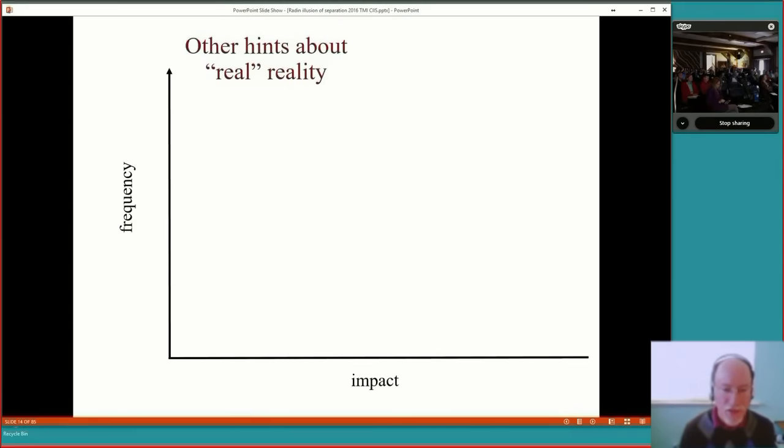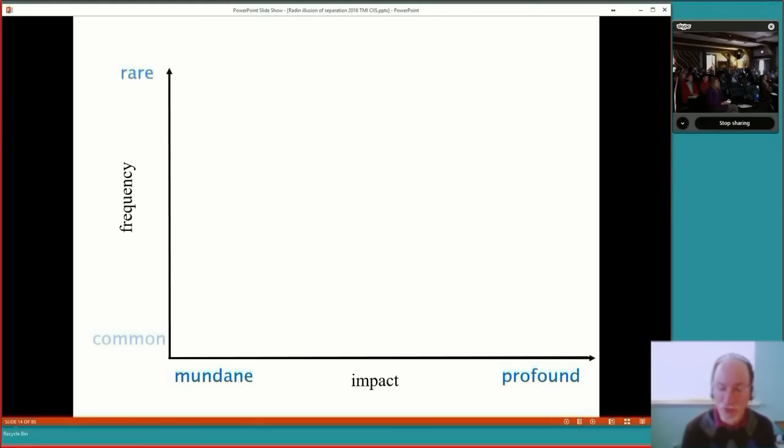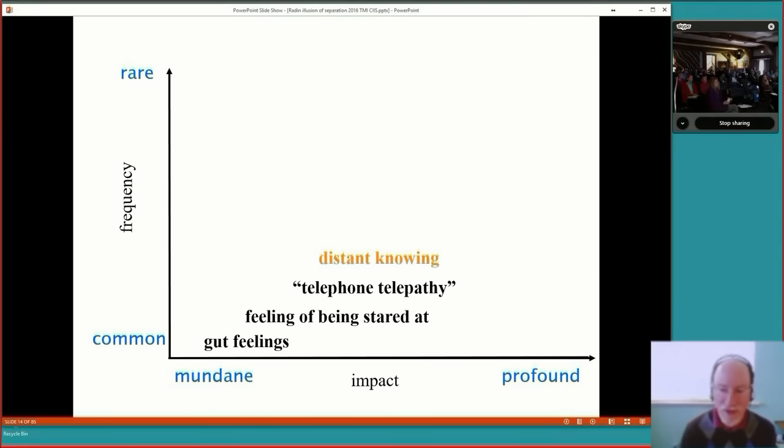Well, there are other hints about what real reality may be, and we can put them on this graph. The graph on the bottom is the emotional impact of an experience, and the vertical axis is the frequency. These hints are things like, if you ask virtually any audience, have you ever had a gut feeling about something that turned out to be true? This is a common and mundane effect. Feeling of being stared at, telephone telepathy, where you know who's calling without looking at the phone yet. Distant knowing, distant healing, premonitions, creative insight, religious epiphany, and somewhere near the top is full-blown mystical union.